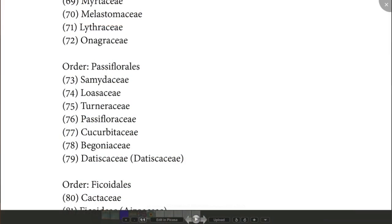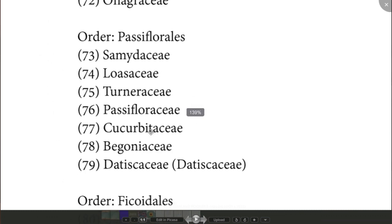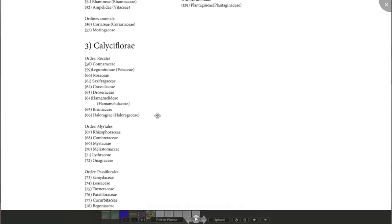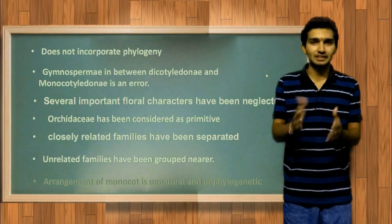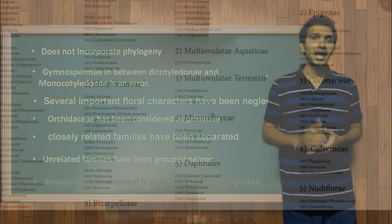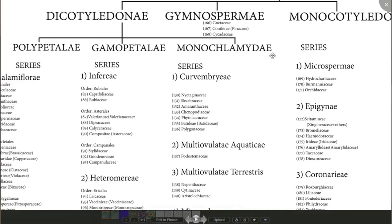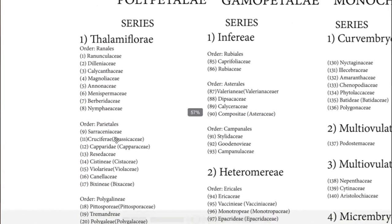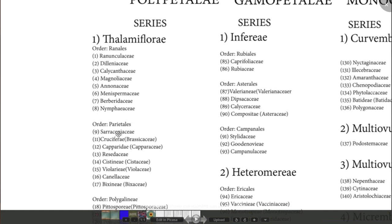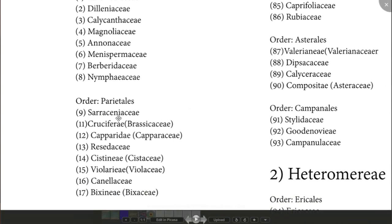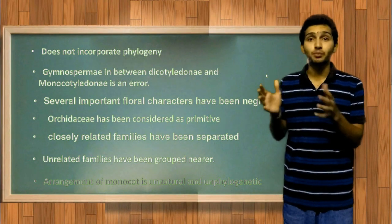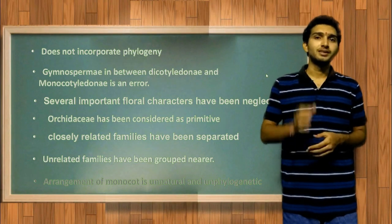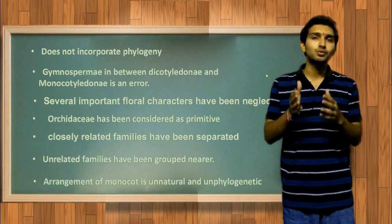Another practically absurd feature is that Cucurbitaceae flowers are not fused, yet they are placed in Gamopetalae instead of elsewhere. This is also a great demerit and a misleading error. Additionally, Lentibulariaceae of series Multicostate Terrestres of Monochlamydeae is closely related to Sarraceniaceae of Thalamiflorae, and they are very close to each other but are separated. The treatment of monocots is considered unnatural and unphylogenetic in this system.